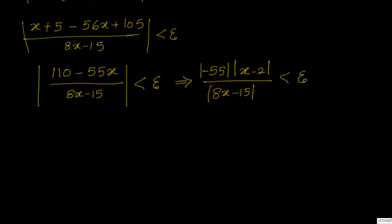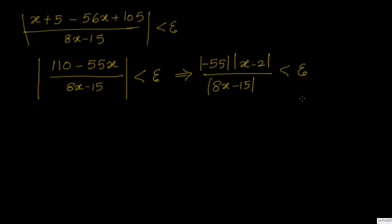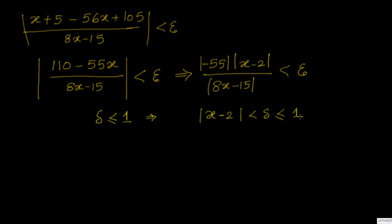The approach we have followed is to convert the expression in the denominator into a constant by applying a condition that delta is less than or equal to 1. That gives us — since |x - a| = |x - 2| < delta, it is also less than or equal to 1.